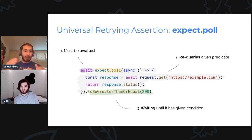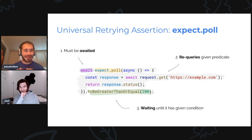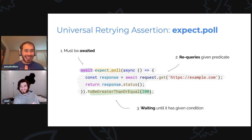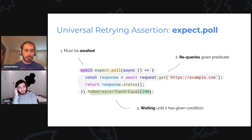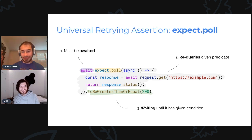This retrying assertion will fetch the URL over and over again until the status is greater than or equal to 200. How often does it poll? It has a log-scale backoff — it slows down the polls over time. What happens if the polling function throws an error? The whole thing will throw an error and we will not retry. So if you have something that might throw an error but that's okay, you should catch it yourself.